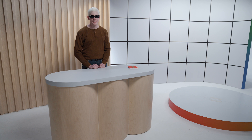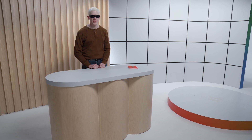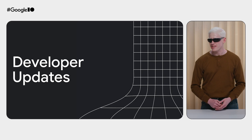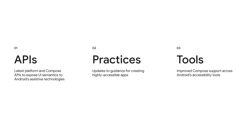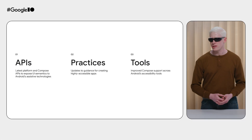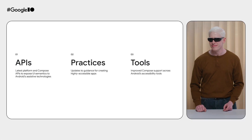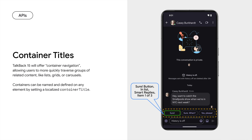Thanks, Perrin. Those are some really exciting enhancements to Android's suite of assistive technologies. I'm Casey Burkhart, a staff software engineer on the Android accessibility team. I'm here to share some updates on how developers can best support Android's accessibility features and build highly inclusive experiences for people with disabilities. I'll cover the latest Android APIs, best practices, and tools for accessibility, and how you can put them into practice within your apps and development workflows. Let's start by detailing some new Android platform and Compose APIs to more expressively convey your UI's semantics to assistive technologies.